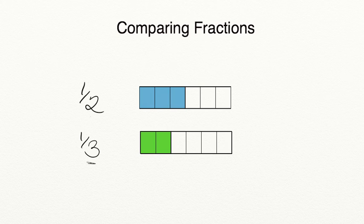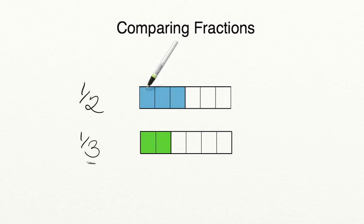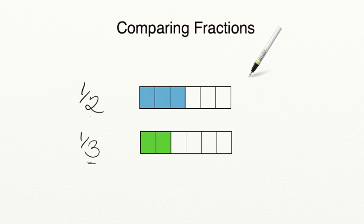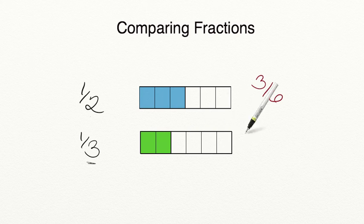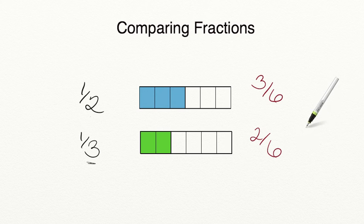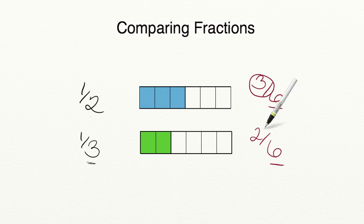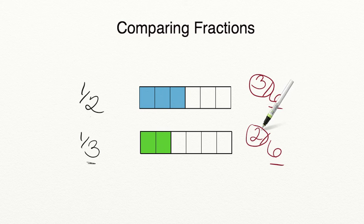Now we have three out of six pieces for the first fraction, so one-half has an equivalent fraction of three-sixths. And we have two pieces shaded in out of six for the second fraction, so one-third is equal to two-sixths. Now that we have the same number of pieces in the whole, we can compare our numerators, and it's very clear that three-sixths is greater than two-sixths.